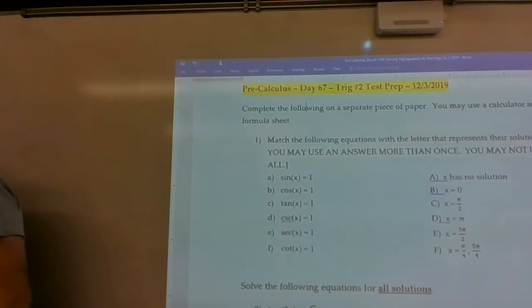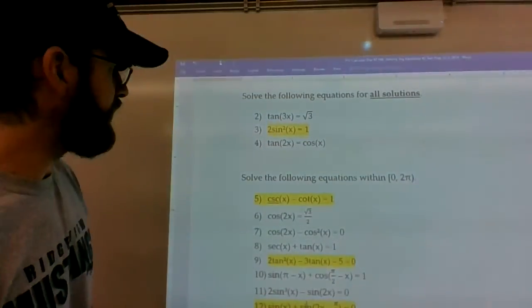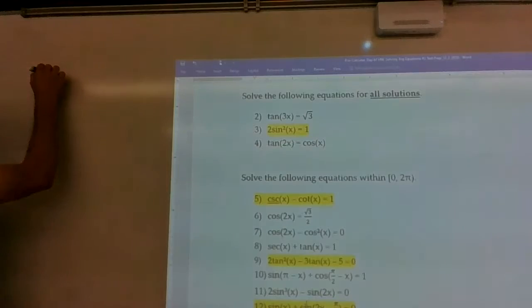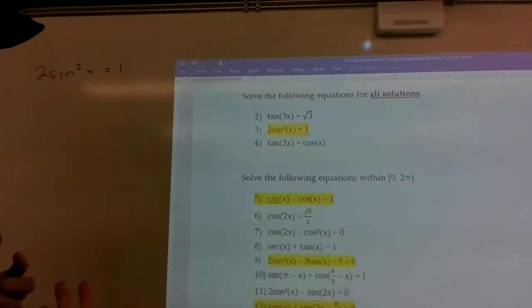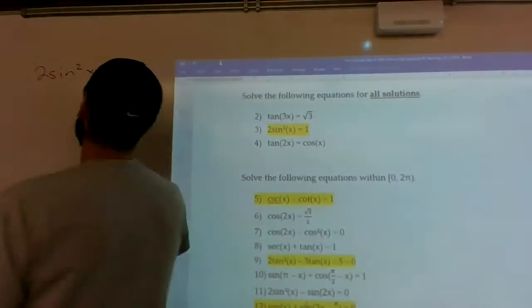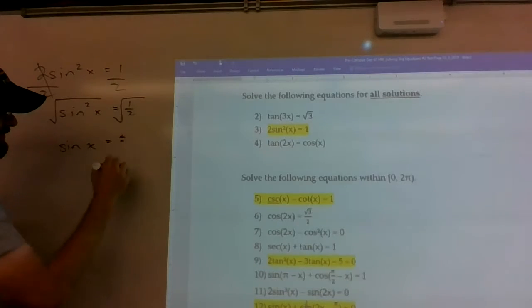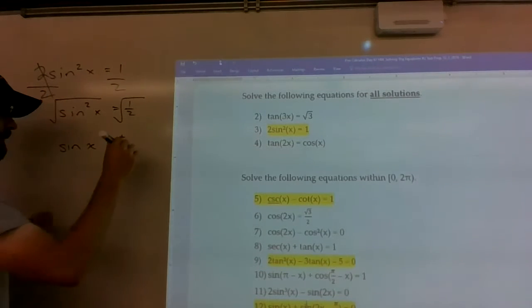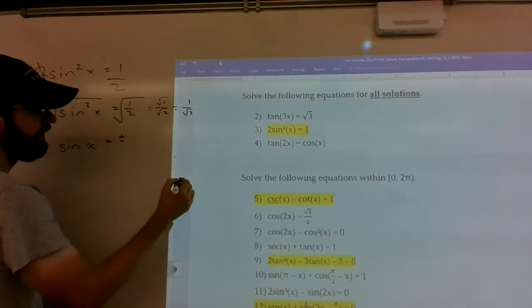So the first one I'm going to start with is one more where you had to deal with all solutions. On number three, you've got 2 sin² x = 1, and you're supposed to solve it with all solutions, not just the ones between 0 and 2π. So the first thing we're going to do is divide by 2 and then square root it. Keep in mind that when you square root both sides with a variable quantity, you need to put a ± if there's a potential for negatives. This is going to be √1/√2, which is 1/√2, which is √2/2.